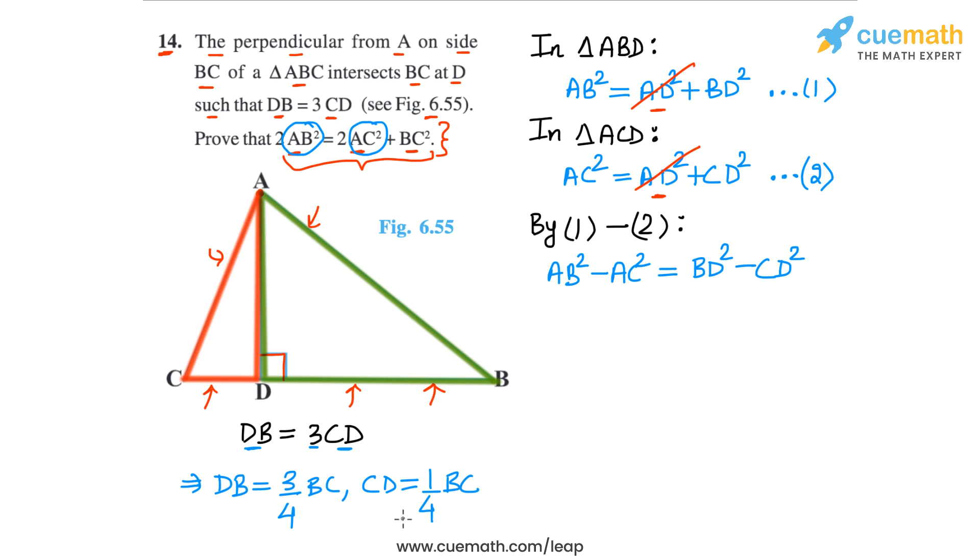Make sure you understand how I've done this. Because DB is thrice of CD and because DB plus CD is BC, we can say that DB will be 3/4 of BC and CD will be 1/4 of BC. Now on the right-hand side, let's write BD and CD in terms of BC.